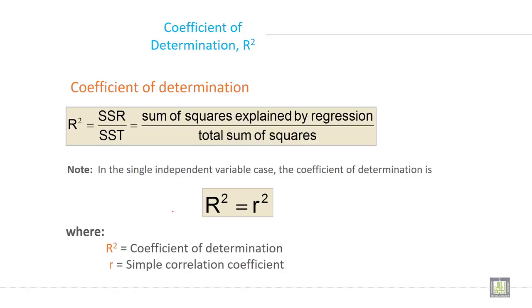In the single independent variable case, the coefficient of determination R² is equal to r². Small r² equals capital R² when you have only one independent variable, where R² is the coefficient of determination and small r is the simple correlation coefficient.